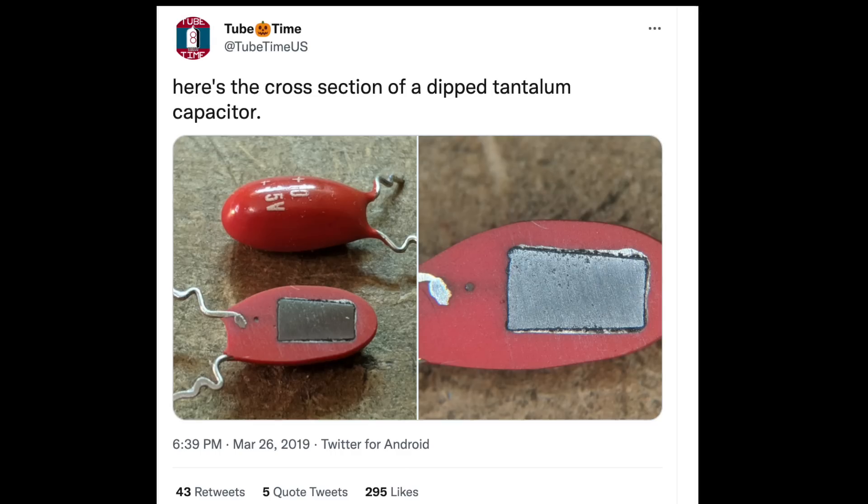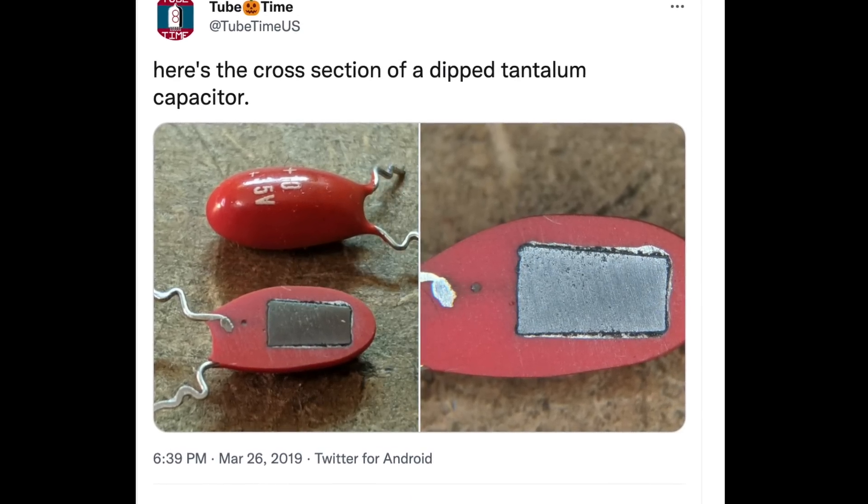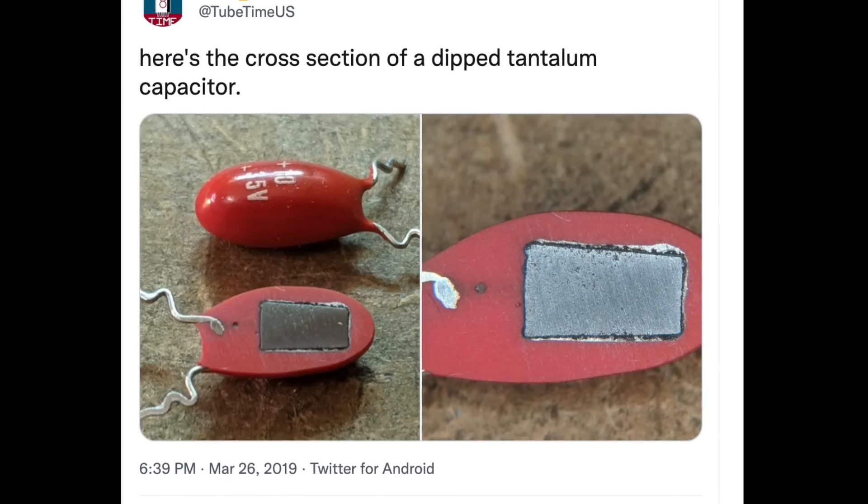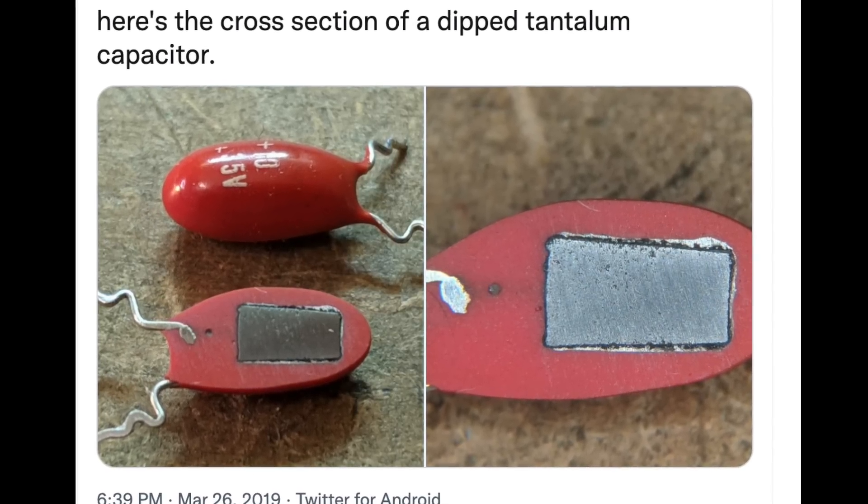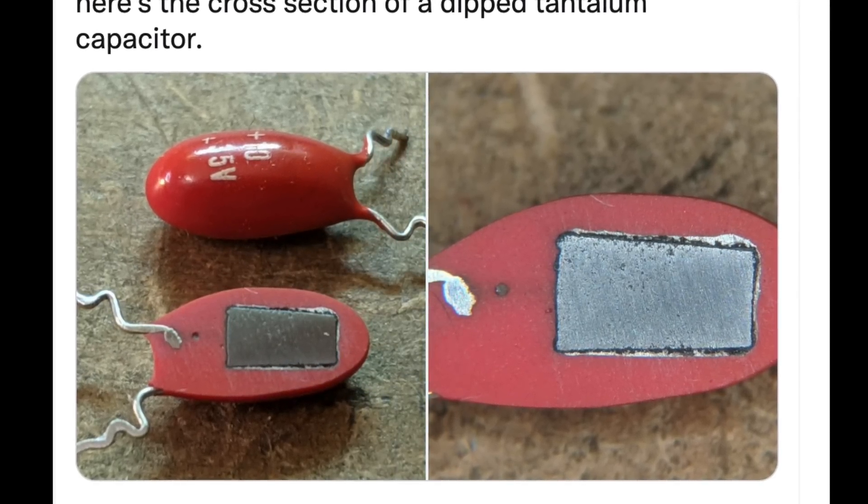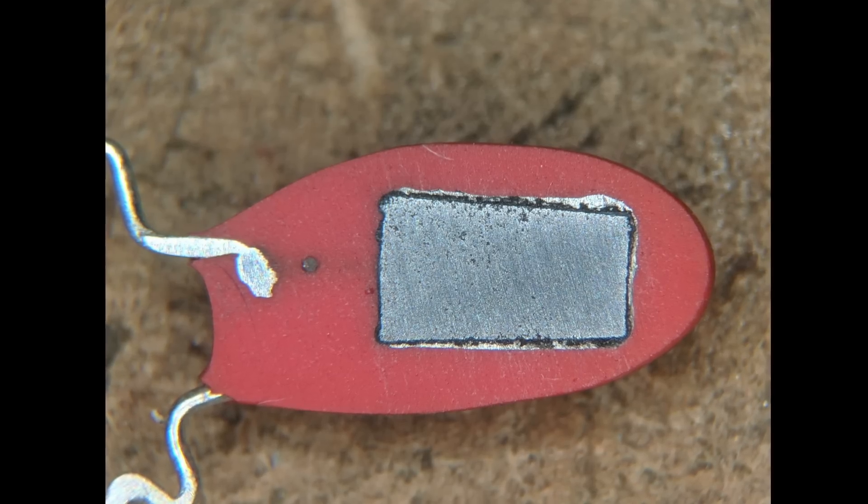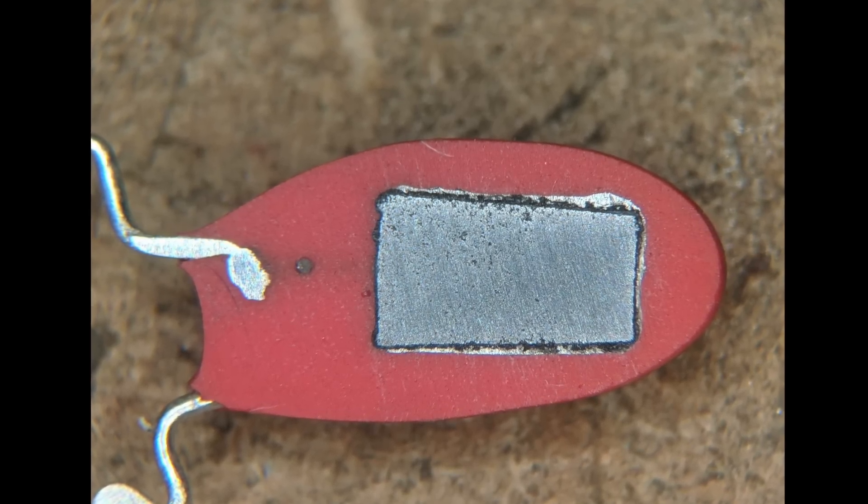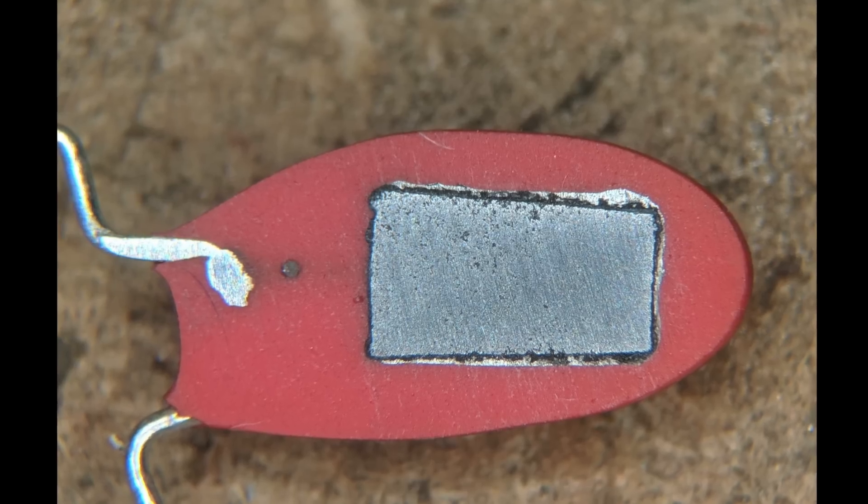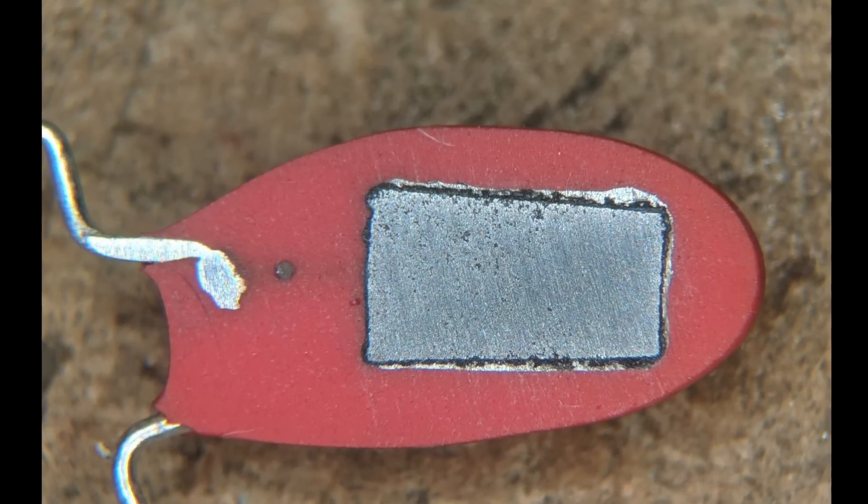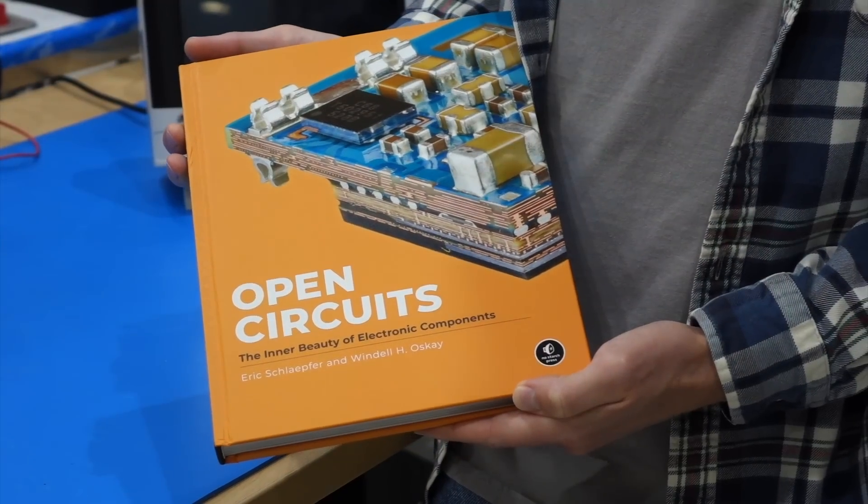When he is not on this channel, he chronicles his electronics adventures on Twitter, where he is known as Tube Time. And that's where it all started, when he got curious about a failed tantalum capacitor and wanted to see if he could find the cause by looking inside. He could not see an obvious failure, but the picture was a hit, and that got him started slicing into all sorts of electronics components.